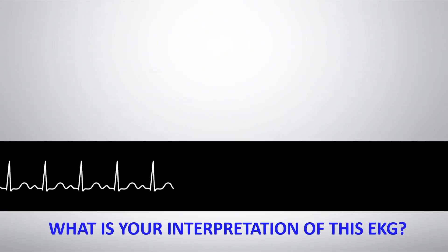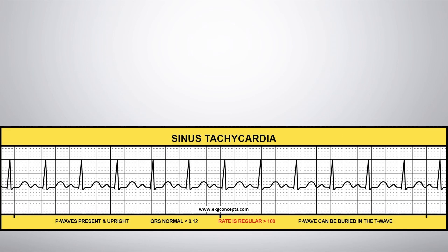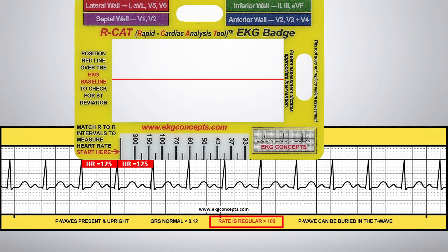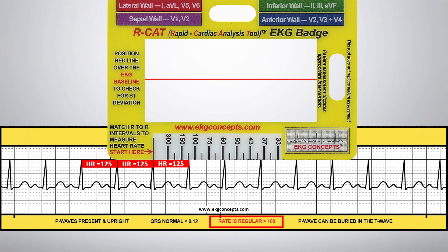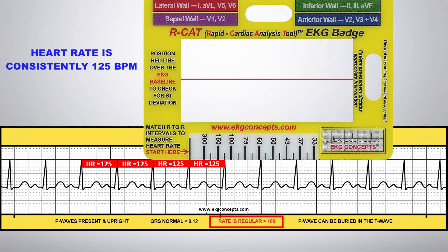What is your interpretation of this EKG rhythm strip? Sinus tachycardia. Using the EKG badge to accurately and quickly confirm, match the R-to-R intervals to measure the heart rate. You have a heart rate that is consistently 125 beats per minute.